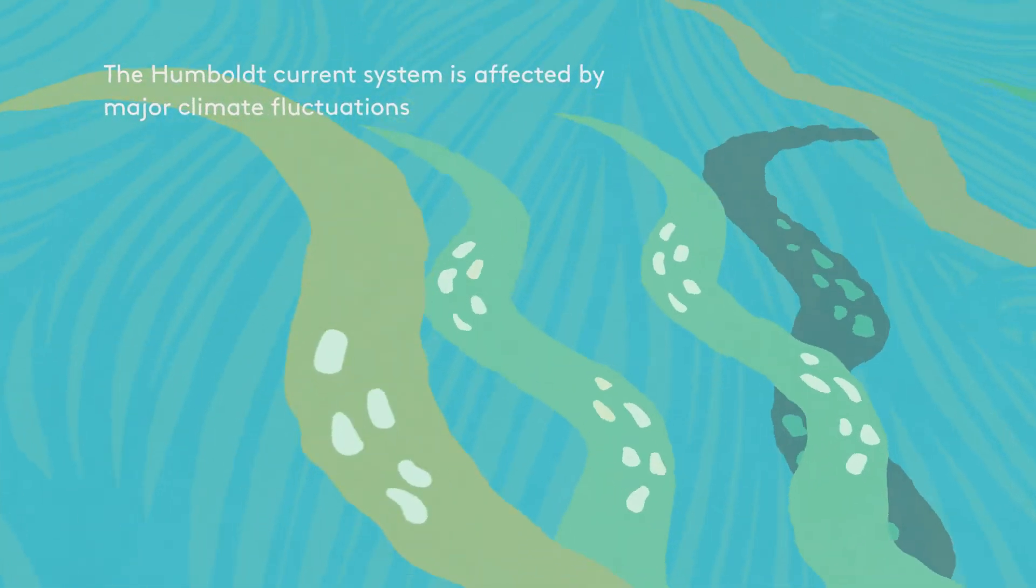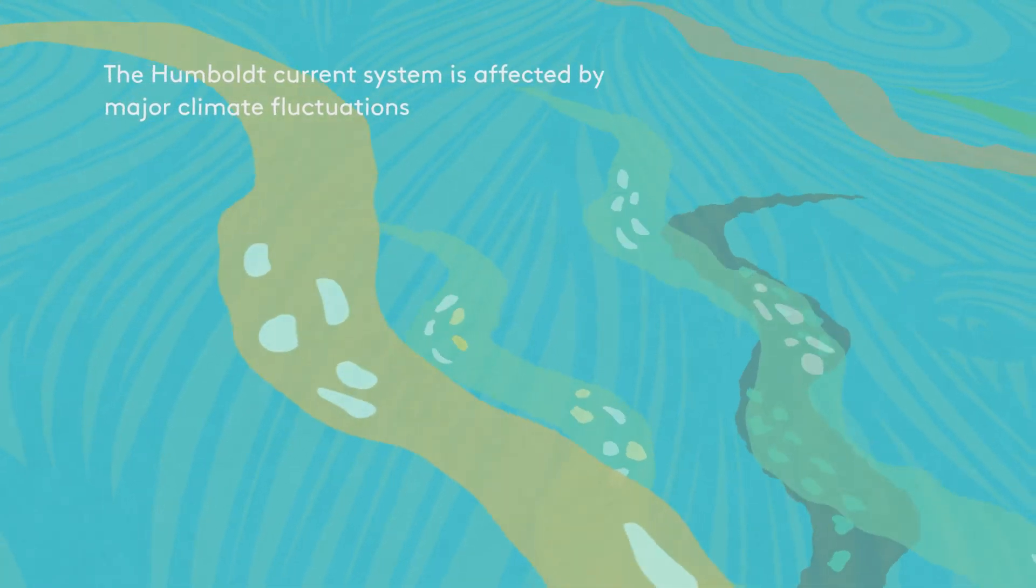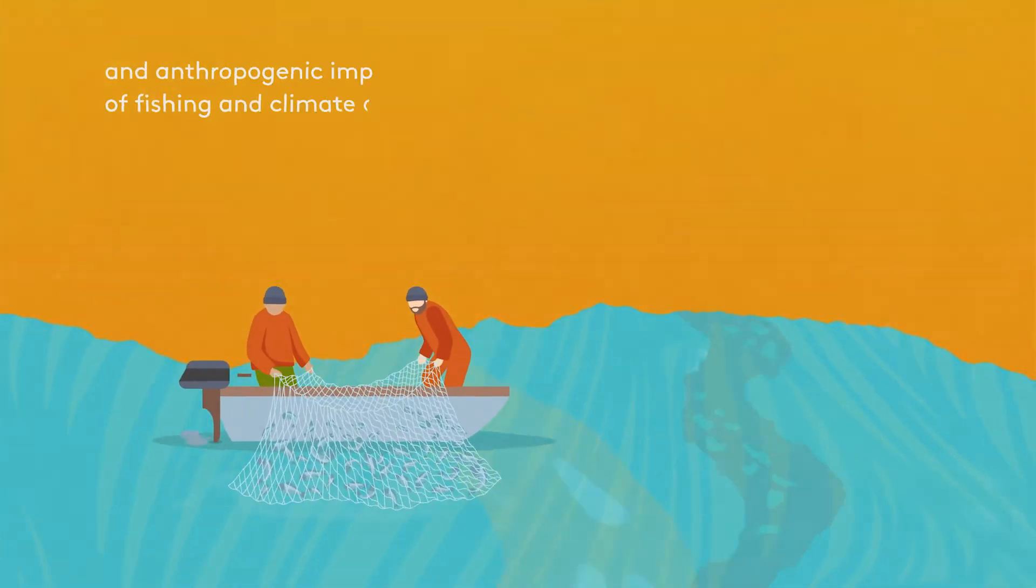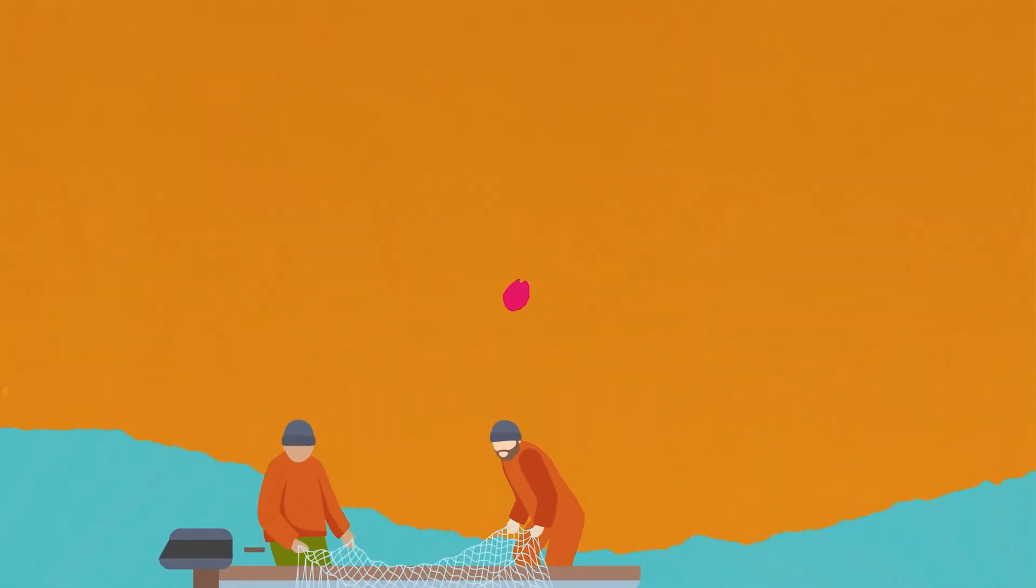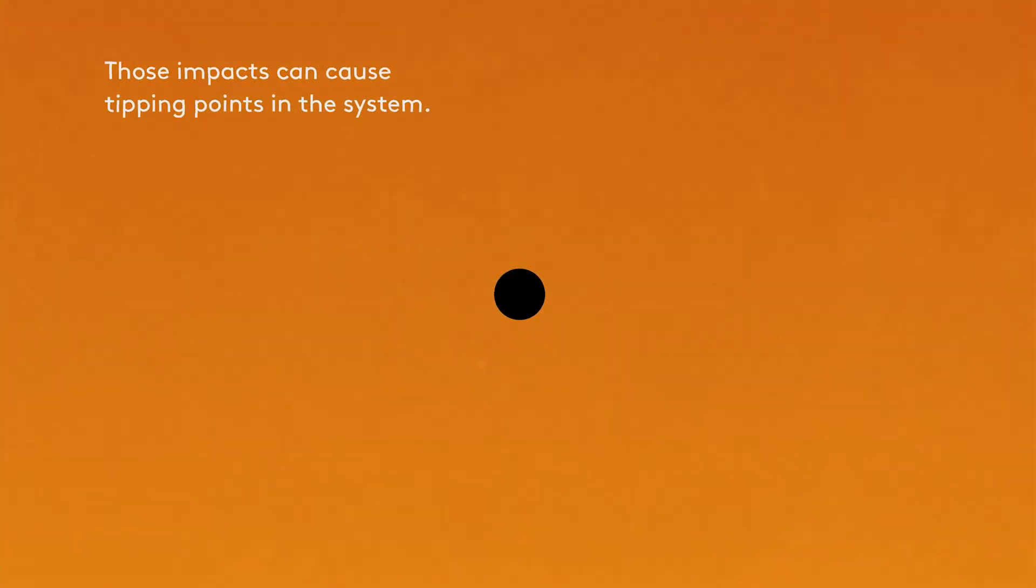The Humboldt current system is affected by major climate fluctuations and anthropogenic impacts of fishing and climate change. Those impacts can cause tipping points in the system.